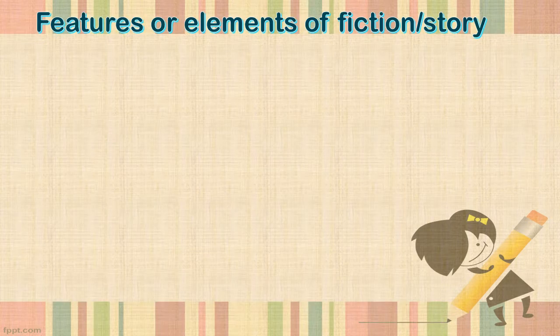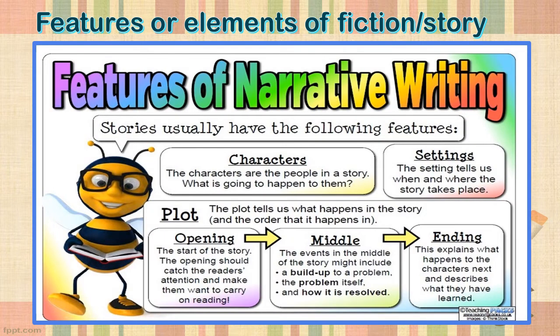We're going to run through the features or elements of a fiction text or story. To start your story with — and that's usually your beginning — you have to have a setting, which tells you when and where the story takes place. Then, very important, are your characters: the people, creatures, or animals in your story. The actual story is called the plot. The plot has three parts: it has the opening or beginning, also called the introduction; then you have a middle part, which is the biggest part — it has a build-up and then a problem, which is also the climax; and then it winds down, the problem is solved, and it ends up with an ending.